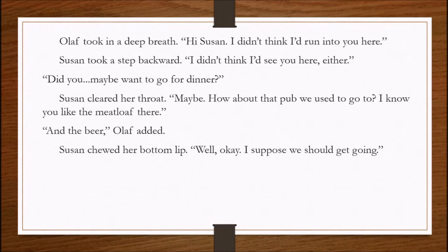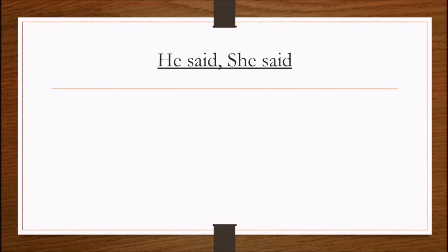The second example offers a brief glimpse into the lives of Olaf and Susan. When Olaf takes in a deep breath, we assume that there is some tension between the two. The point is confirmed by Susan's physical and verbal reaction. The dialogue alludes to a shared history, and Susan even remembers Olaf's favorite meal at the pub.